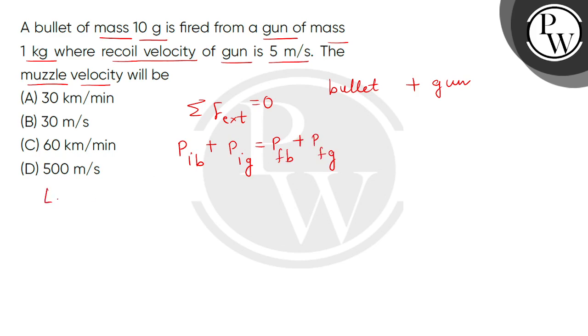It means we have applied the law of conservation of linear momentum. So, children, here we can see if the bullet of mass is mb and its velocity is after firing vb, which we call muzzle velocity, and gun of mass is mg and its velocity is vg, which is also called as the recoil velocity.